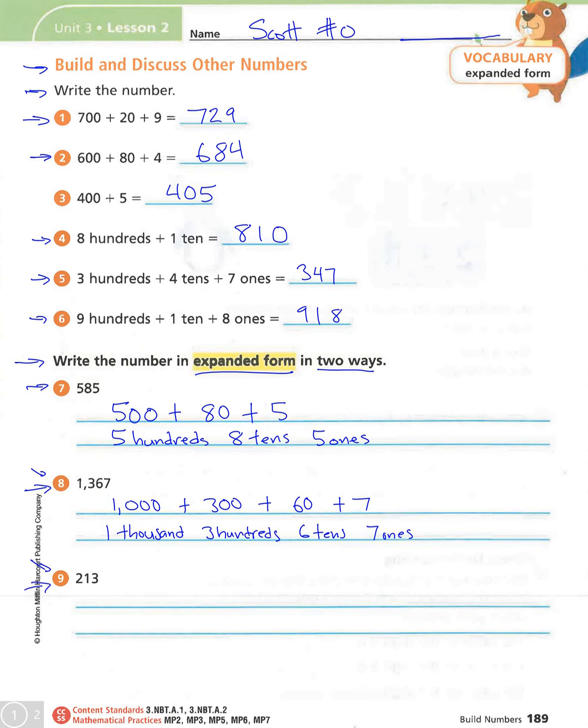And then number 9, 200 plus 10 plus 3. So this is really, again, this is the expanded form. You do see it in word form, but most often we're going to see it like this.